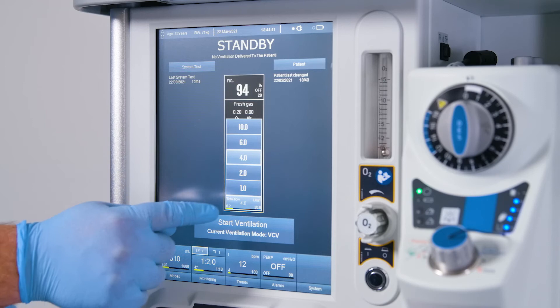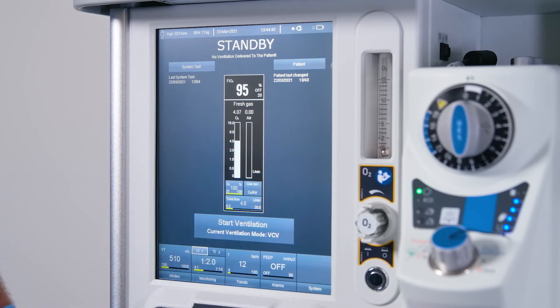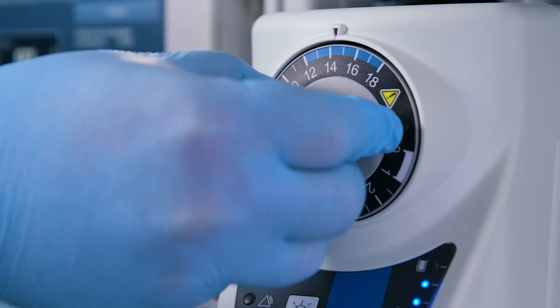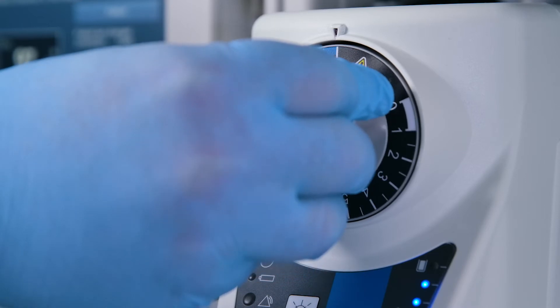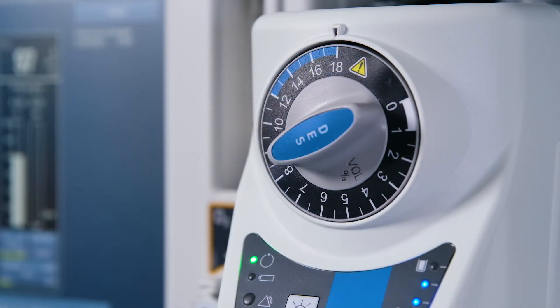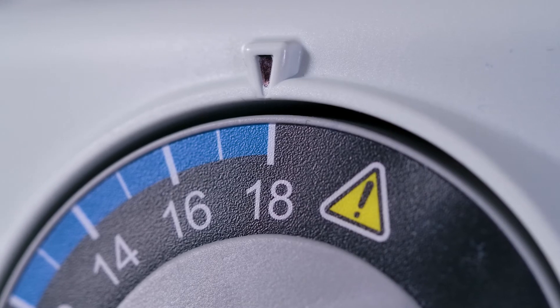Set a fresh gas flow of 4 litres per minute on the anesthetic machine. Set the concentration control dial to 18%. Purge the vaporizer for a minimum of 30 seconds.